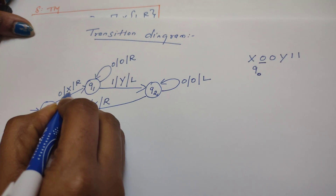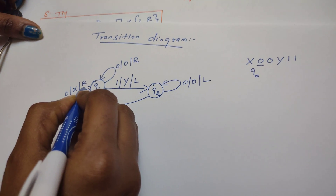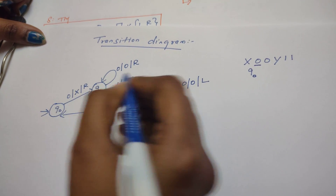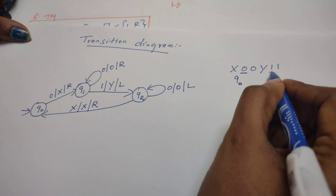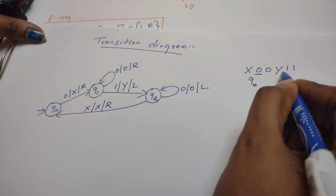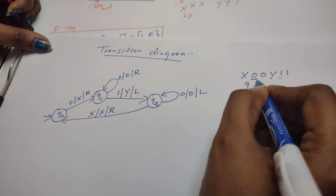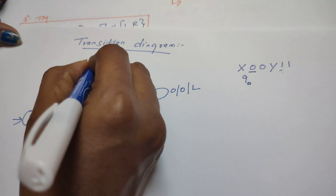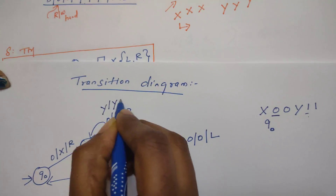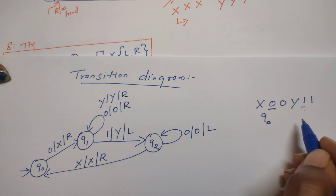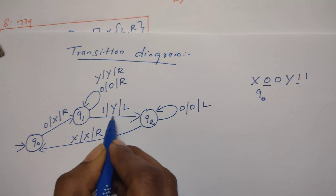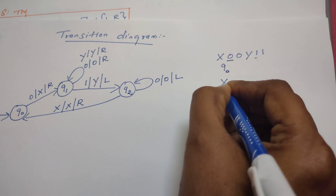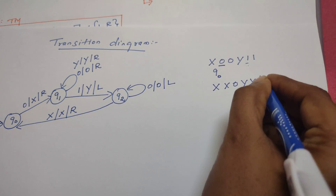Now from q0, the next zero is replaced by x and the head moves right. While reading symbols moving right, before reaching the next one the machine may now encounter y's — because the earlier one was replaced by y. When it reads y's in between, they are not disturbed and the head continues moving right. After passing the y's it reaches the next one, which is replaced by y, and the head moves left.